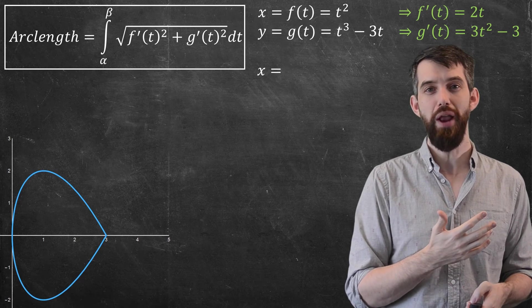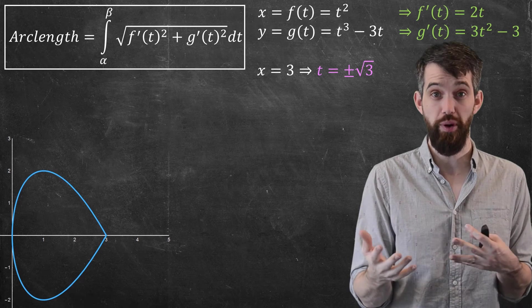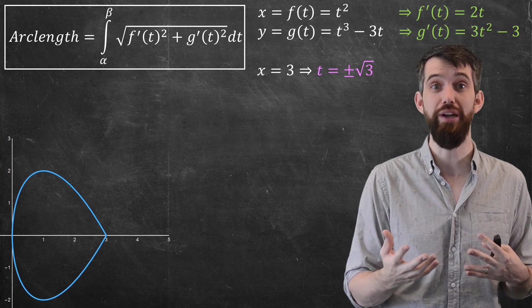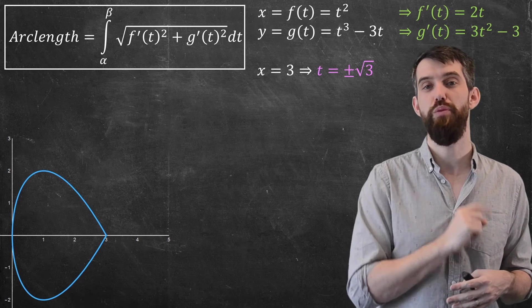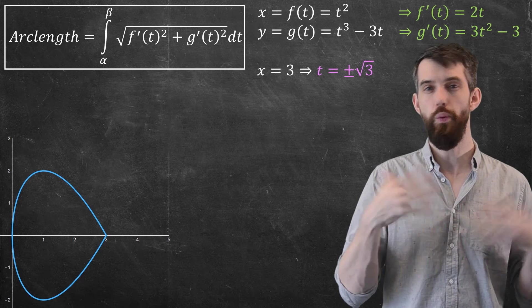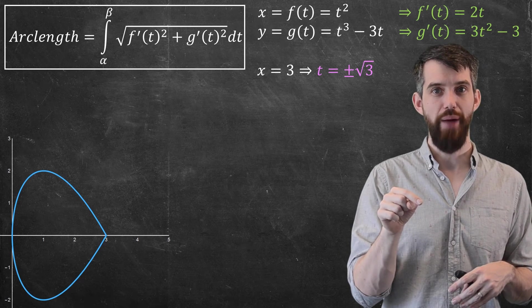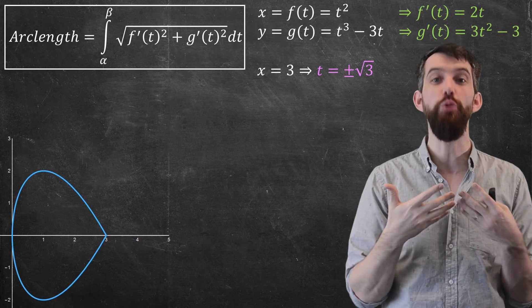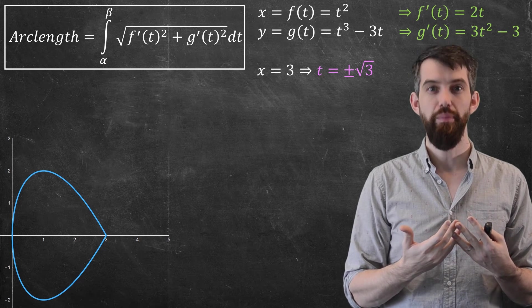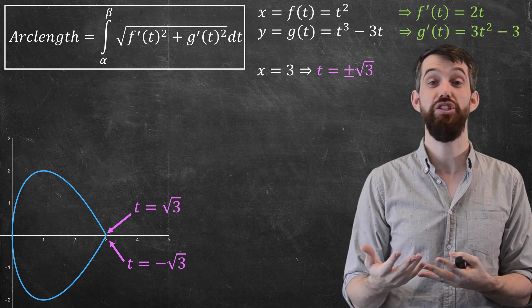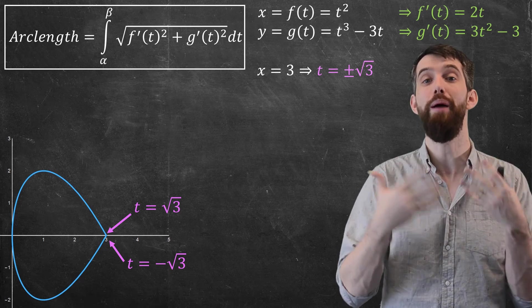Well, what I'm going to do here is if x is equal to 3, we've seen in the past that we can solve the equation, that gives you t is plus or minus square root 3. So what I'm doing is I'm starting at x equal to 3, I'm going all the way around my loop and getting back to x equal to 3, but it's at two different t values. I could start at minus root 3 and go up to plus root 3.